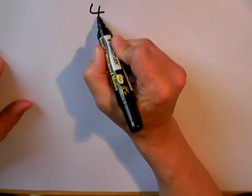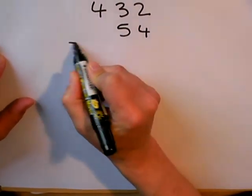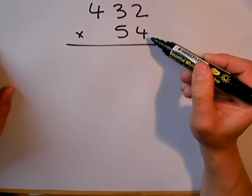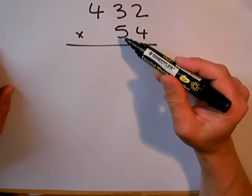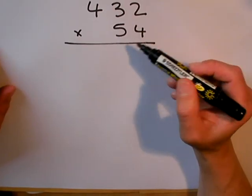My next example is a three-digit number, 432 multiplied by 54. Again, I'm going to multiply by the 4 first, and then I'm going to multiply by the 5. But because the 5 is really a 50, I need to remember to put my 0 down. So,